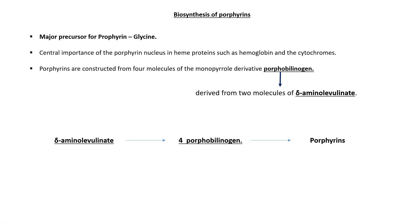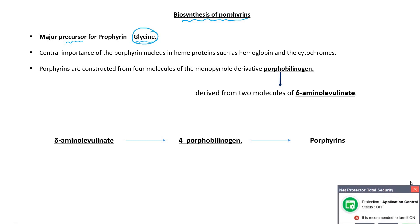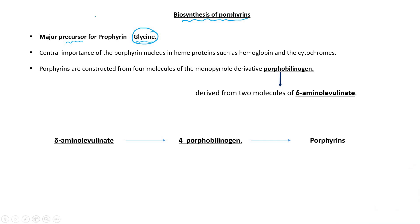Now let's start the lecture. The topic is biosynthesis of porphyrins. For the biosynthesis of porphyrin, the major precursor is glycine. It means glycine is not the only precursor for the biosynthesis of porphyrin — glutamate is also a precursor — but the major precursor for biosynthesis of porphyrin is glycine.